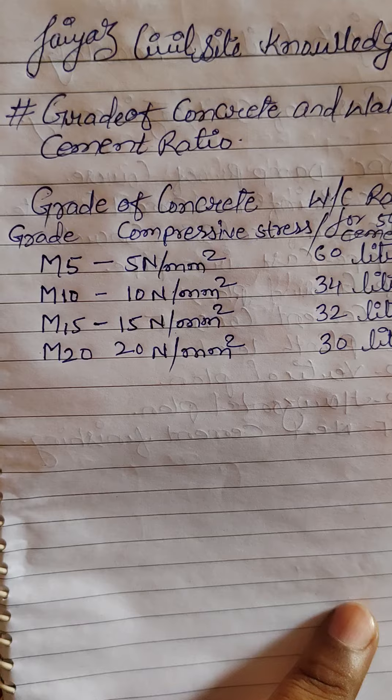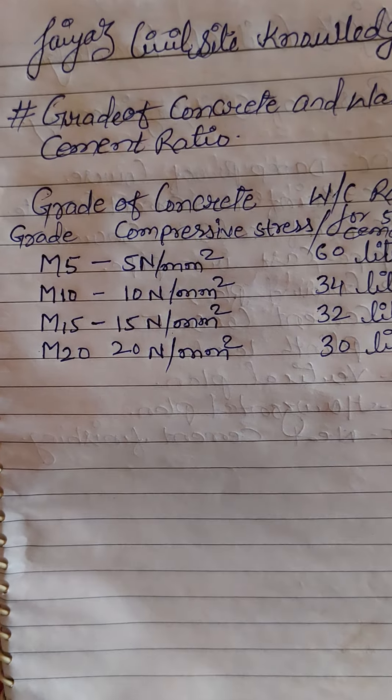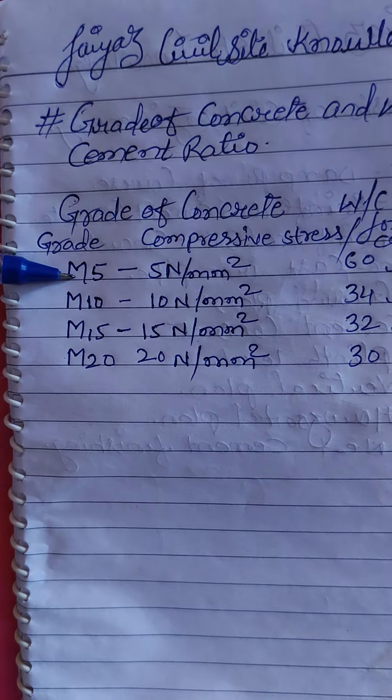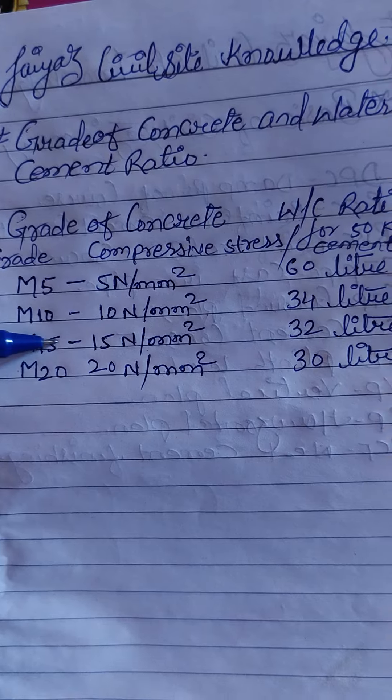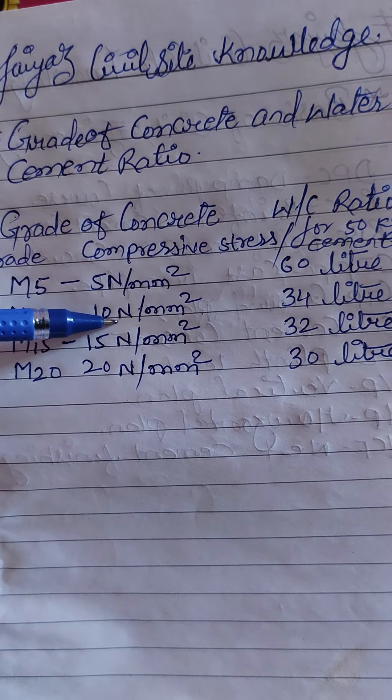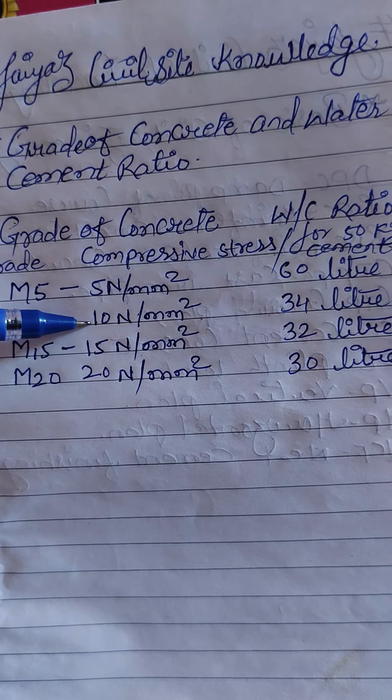Dear friends, the grades of concrete are M5, M10, M15, and M20. The number denotes the compressive strength in N/mm². M5 can withstand 5N per mm² load, M10 can resist 10N per mm², M15 can resist 15N per mm², and similarly M20 can resist 20N per mm².